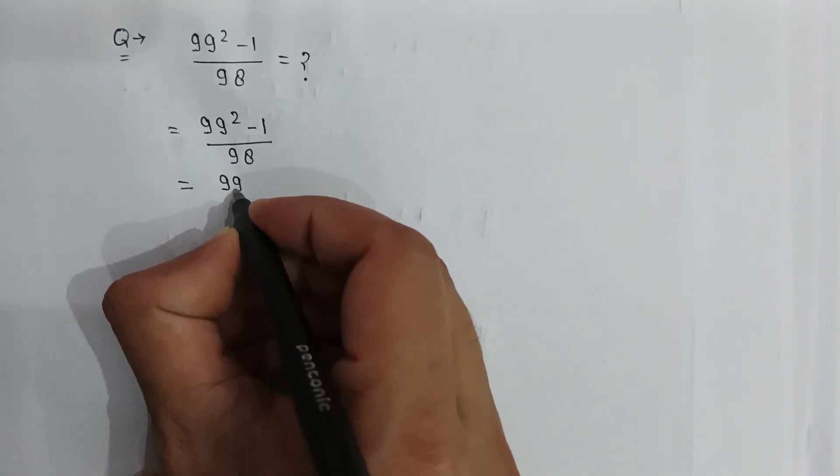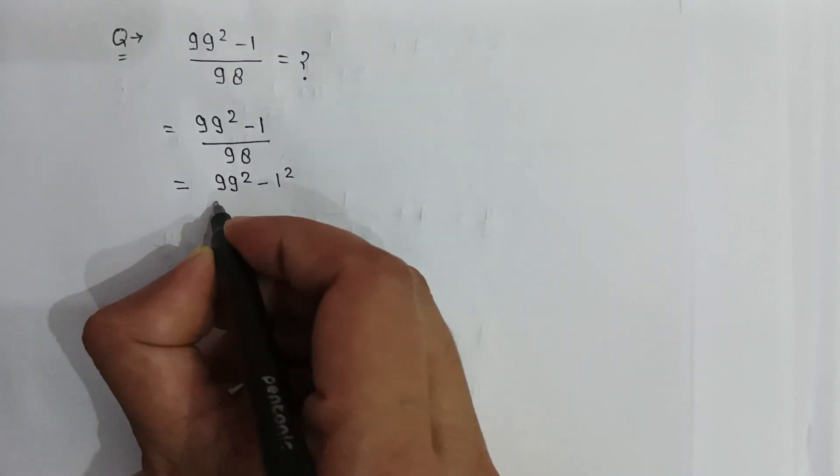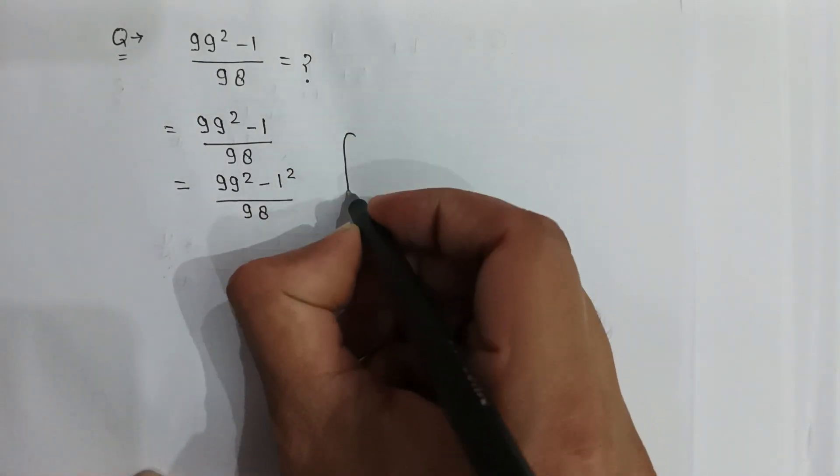It can be written as 99 squared minus 1 squared over 98. As we know...